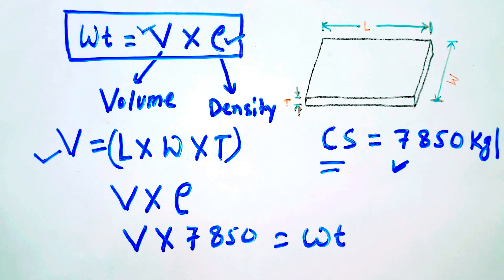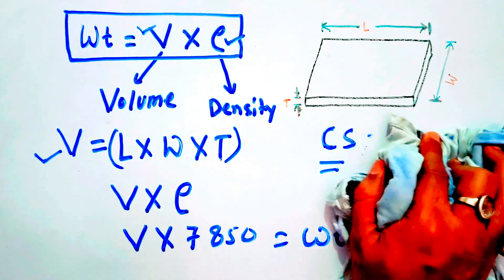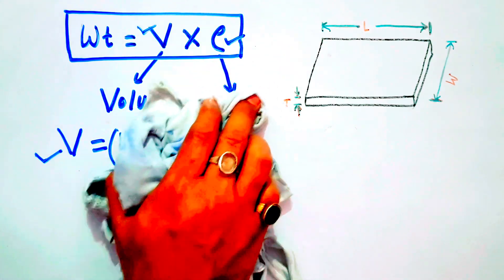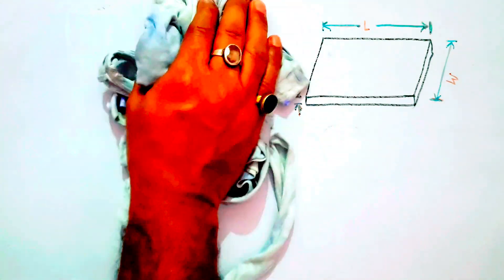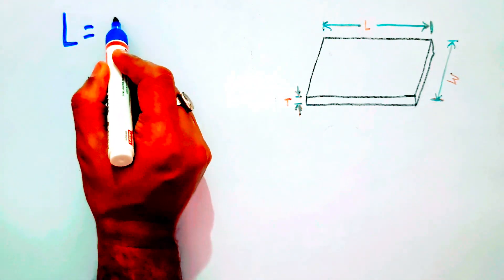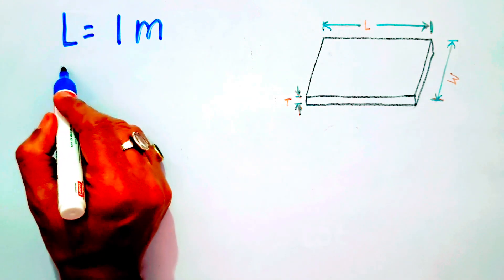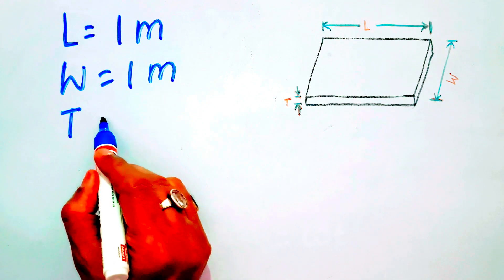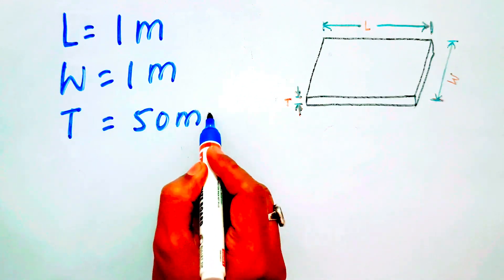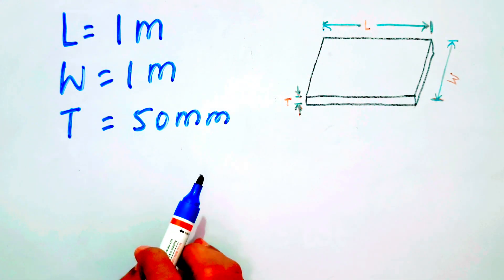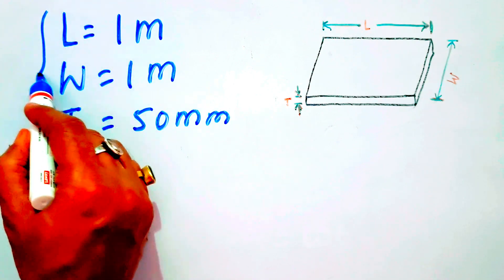Now we will understand with the help of an example. We will assume the length of a plate as 1 meter, width as 1 meter, and thickness as 50 mm. So the scenario is: length is 1 meter, width is 1 meter, thickness is 50 mm, and we have to calculate the weight of this plate.